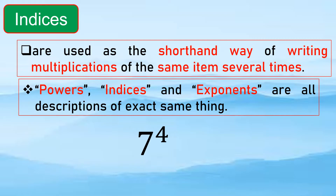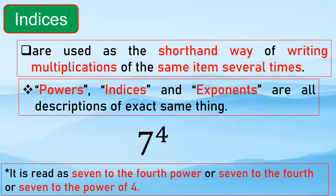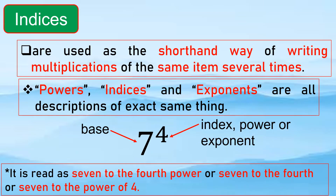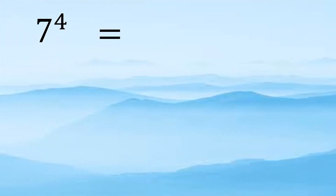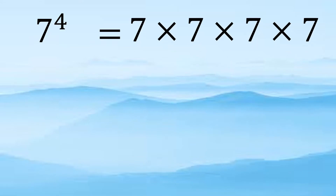If we have 7 to the 4th, it is read as '7 to the 4th power,' '7 to the 4th,' or '7 to the power of 4.' So this is the base and this is the index, power, or exponent. 7 to the 4th is equal to 7 times 7 times 7 times 7, meaning that 7 is multiplied 4 times by itself.